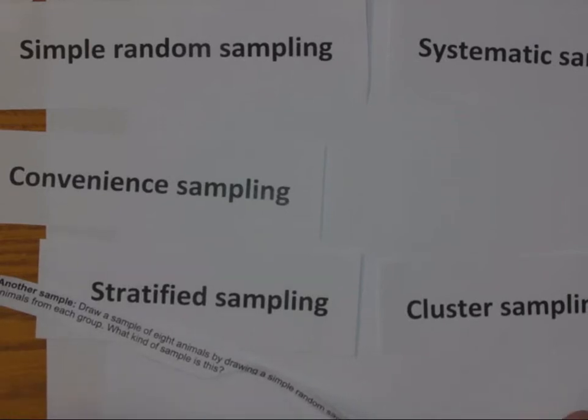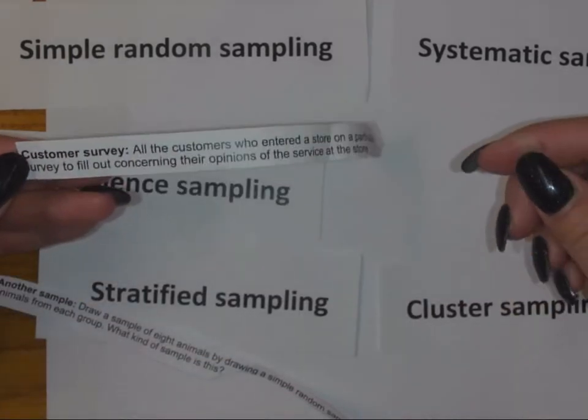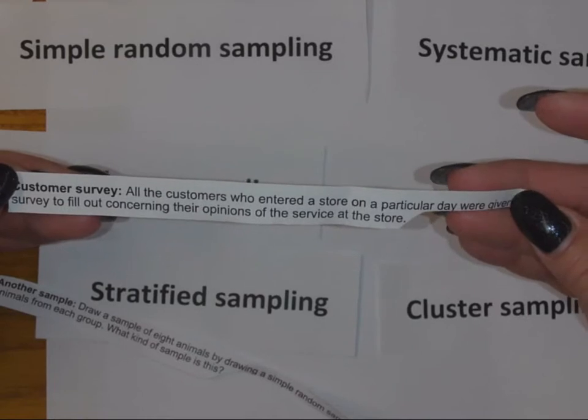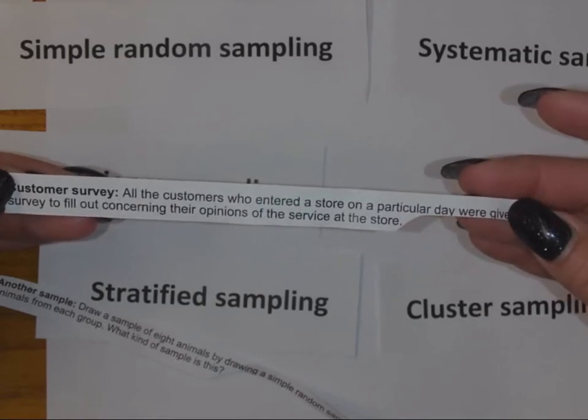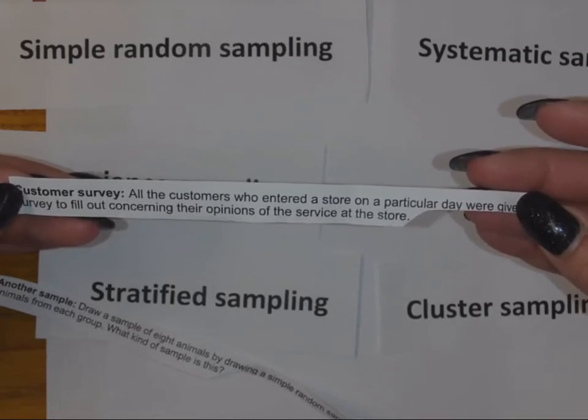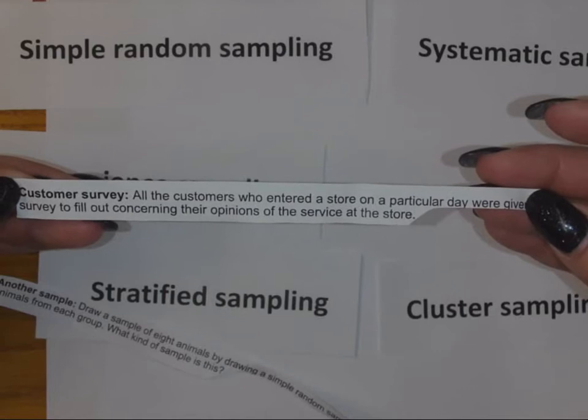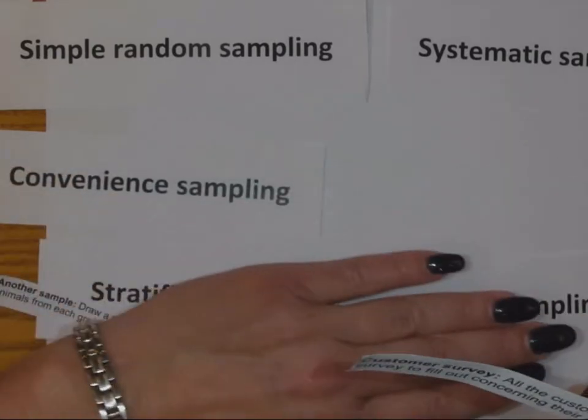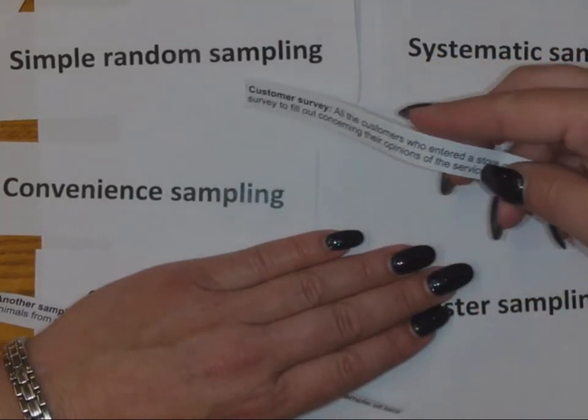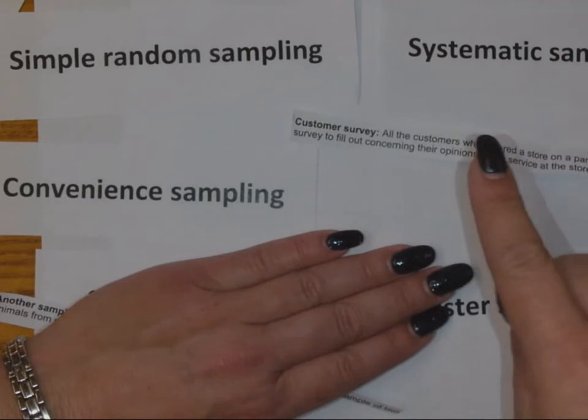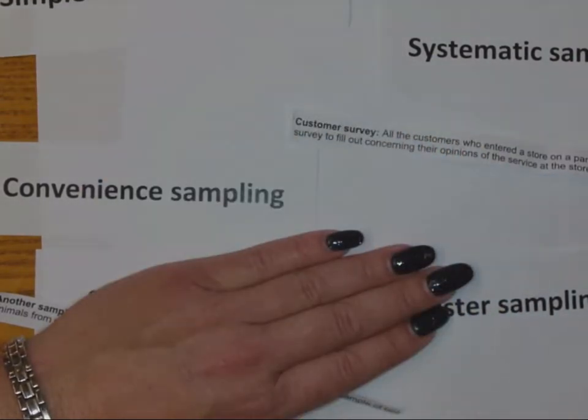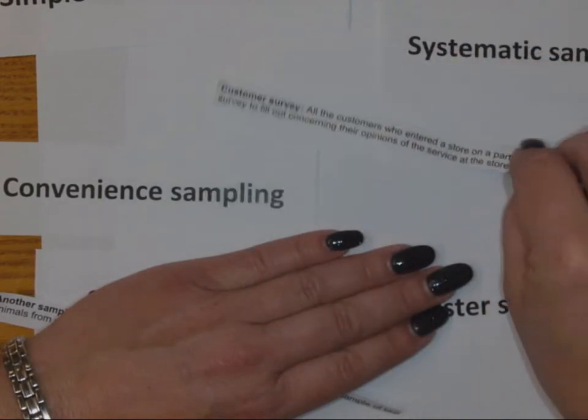Customer survey: all the customers who entered a store on a particular day were given a survey to fill out concerning their opinions of the service at that store. What do you think? It's not simple random, it's not groups first of all, so you can get rid of these two. It says all the customers who entered a store on a particular day, so it's not random because it's more of a census for that day.